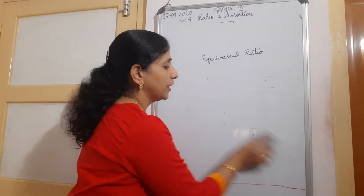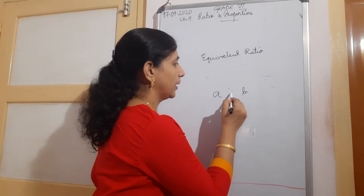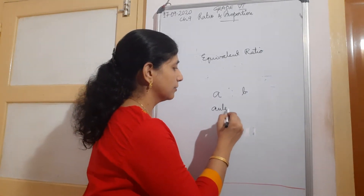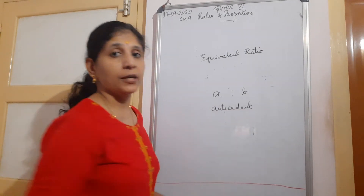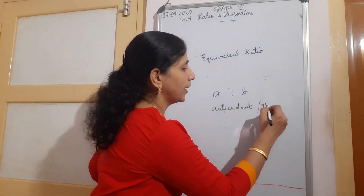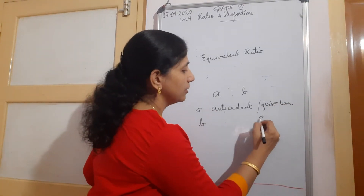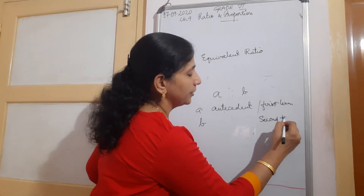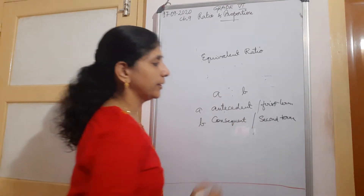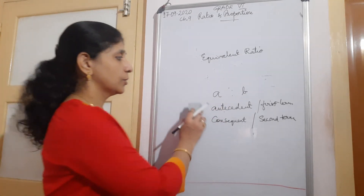Now the terms in a ratio. There are 2 terms in a ratio, A ratio B or A is to B. The first term A is called the antecedent. The second term B is called the second term or consequent. So the two terms are antecedent and consequent.